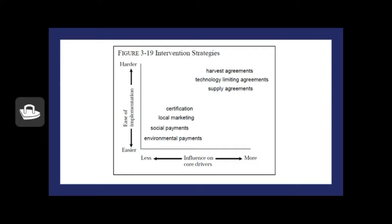Things like environmental payments and social payments, local marketing, certification like organic certification are relatively easy and less effective. The things that are really difficult to do are also more effective, like harvest agreements and limiting technology, supply agreements in which production supplies are reduced. These things are really difficult to do. These are the kind of structures we need to create long-term systemic change.